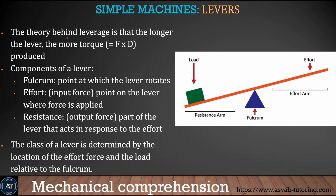The theory behind the lever is that a longer lever provides more torque. You can see the different components of a lever. The fulcrum is the point at which the lever rotates — you go up and down around the fulcrum, and torque is always measured at the fulcrum. The effort is the point on the lever where force is applied, and the resistance is the output force — the part of the lever that acts in response to the effort. The class of lever is determined by the location of the effort force and the load relative to the fulcrum.